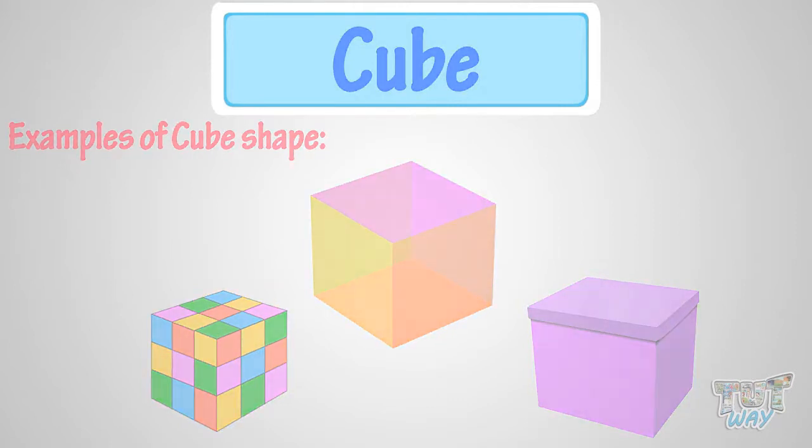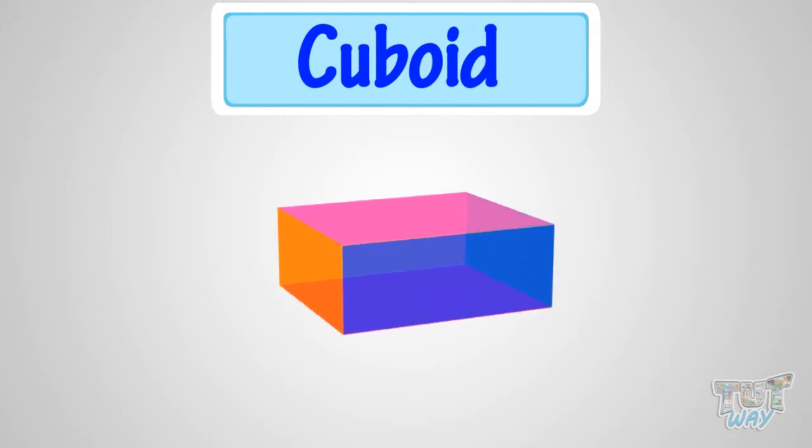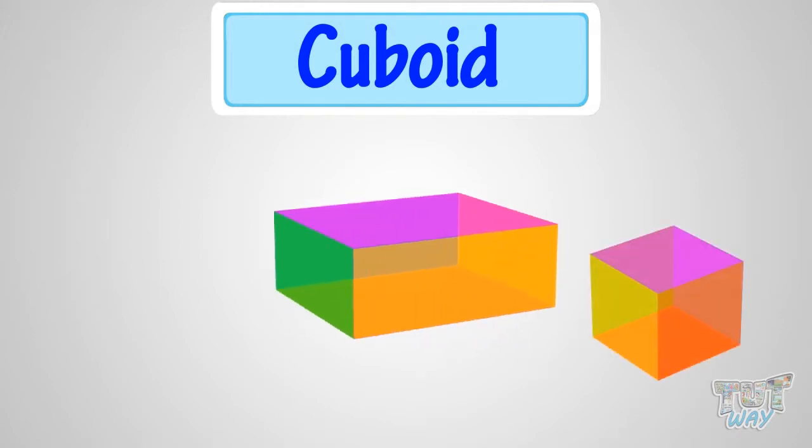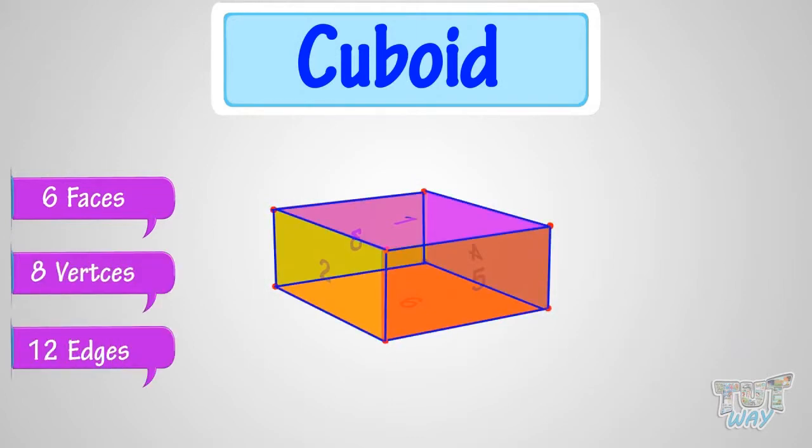Let's learn another 3D shape: Cuboid. A cuboid is a three-dimensional figure which is also box-shaped, like a cube. Cuboid also has six faces, eight vertices, and 12 edges, like a cube.